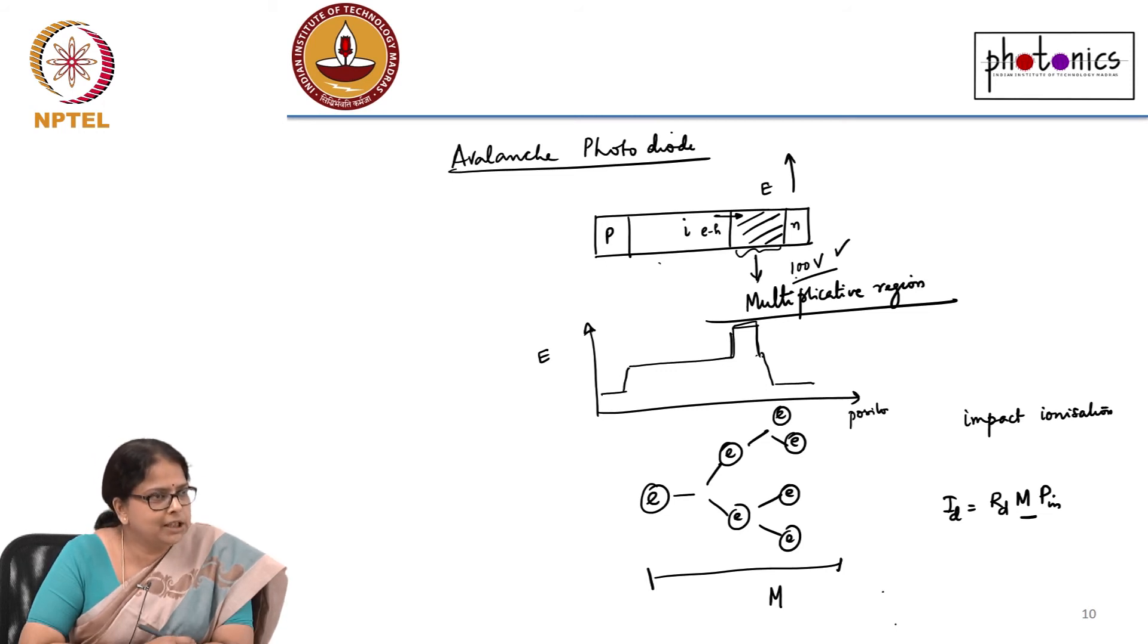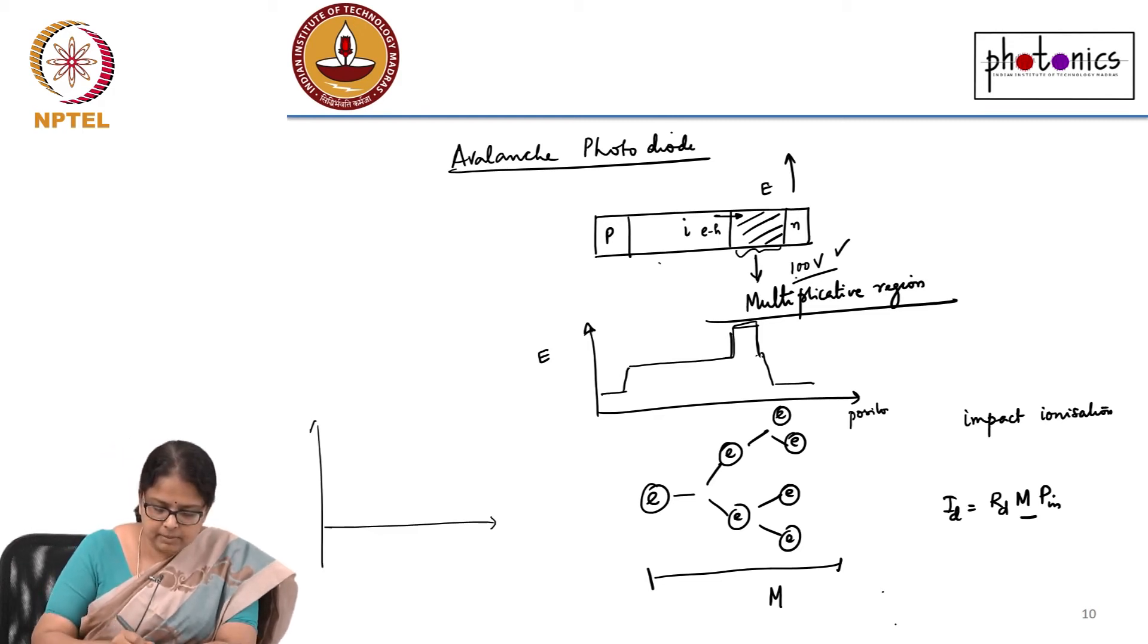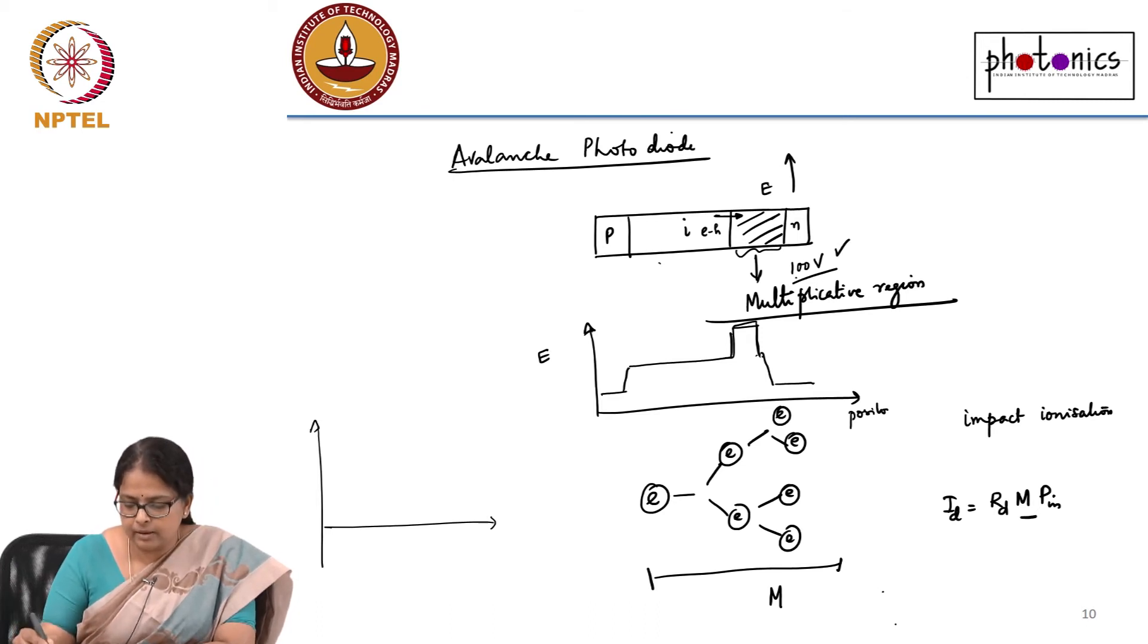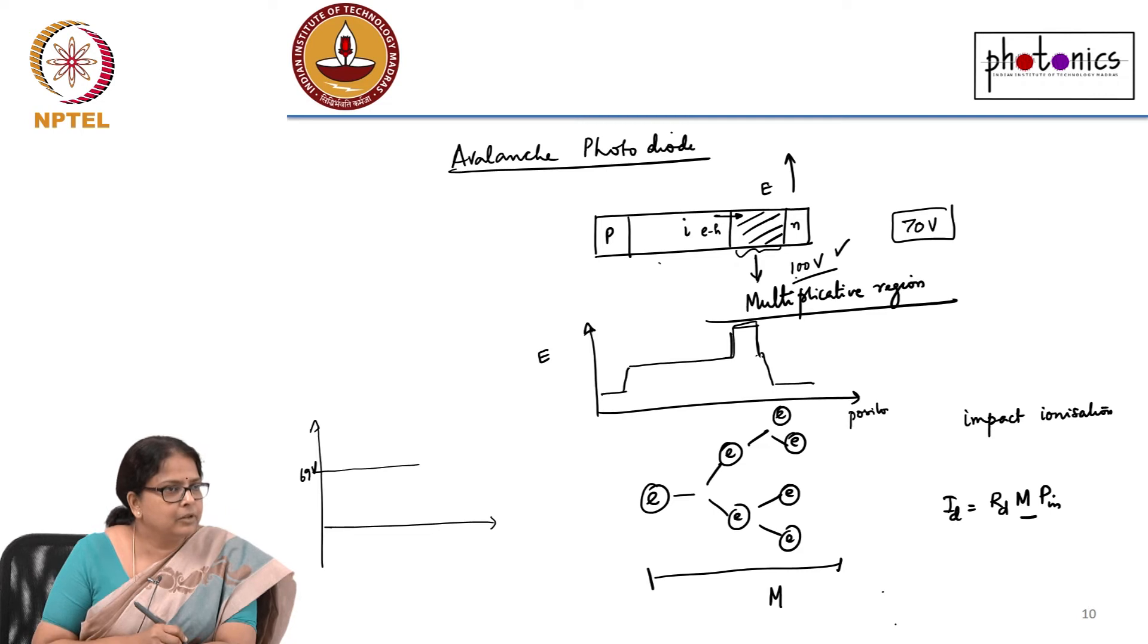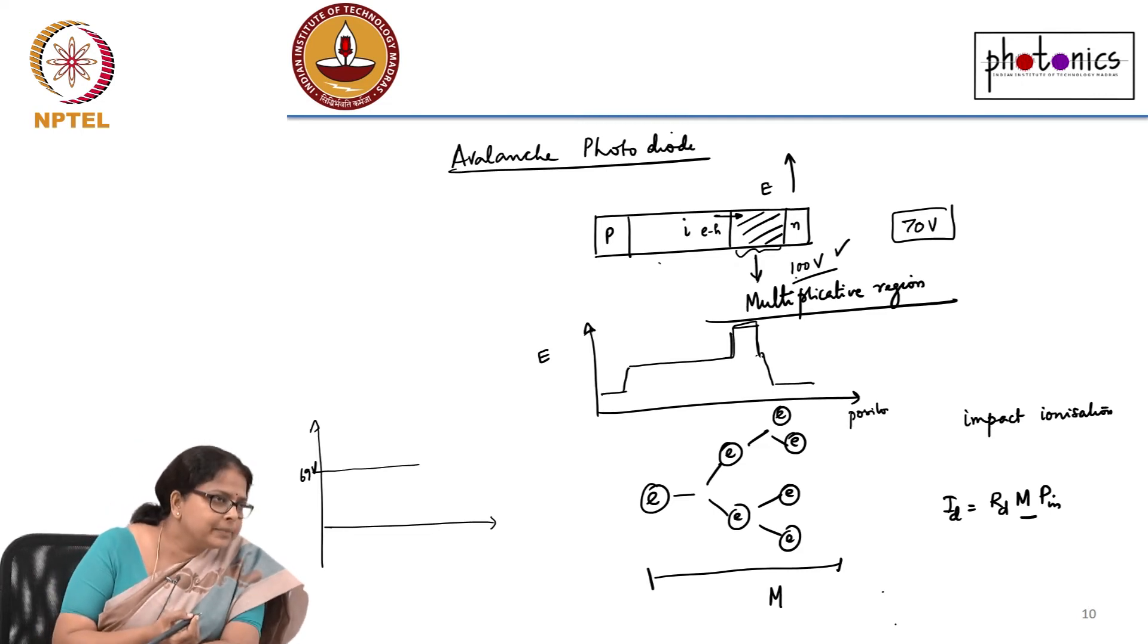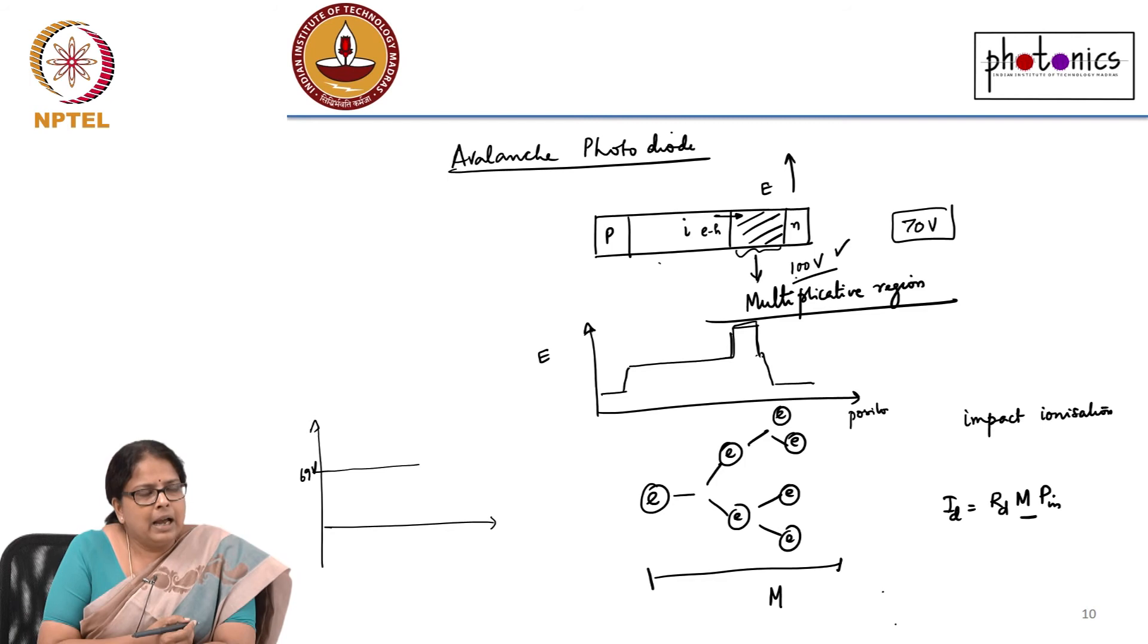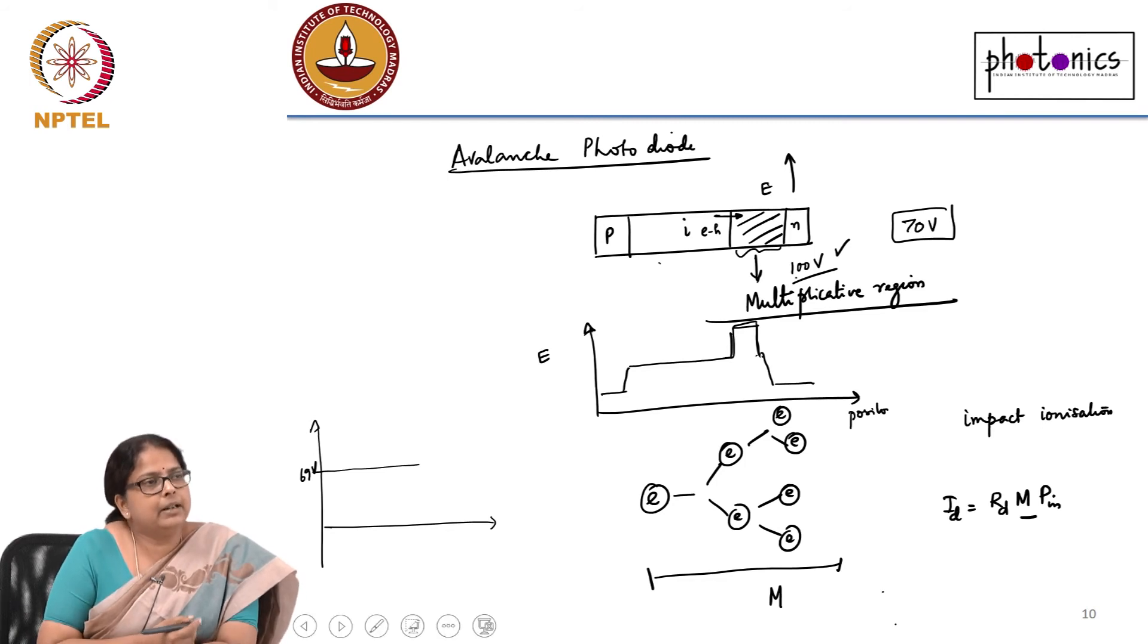In quantum communication these days, the detectors that are used, one way of doing the detection is using an avalanche photodiode. What people do is they keep the reverse bias voltage to be, let's say the threshold required for avalanche detection is 70 volt for the avalanche effect to start is 70 volt. They keep the voltage at something like 69 volt.